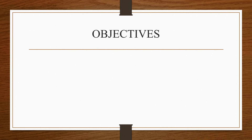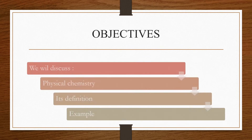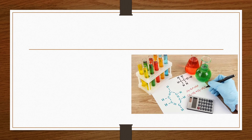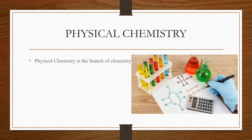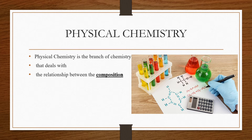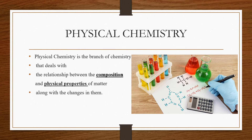Let's see the objectives of today's lecture. Today we will discuss Physical Chemistry — its definition and its example. So, what is Physical Chemistry? Physical Chemistry is the branch of Chemistry that deals with the relationship between the composition and physical properties of matter, along with the changes in them.